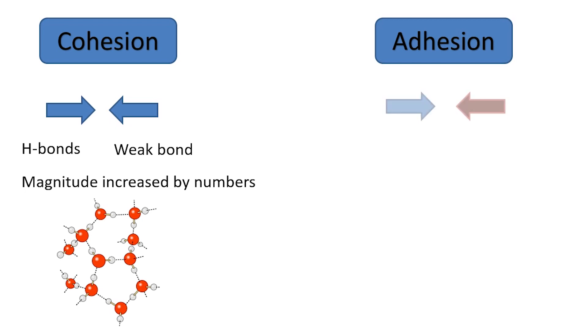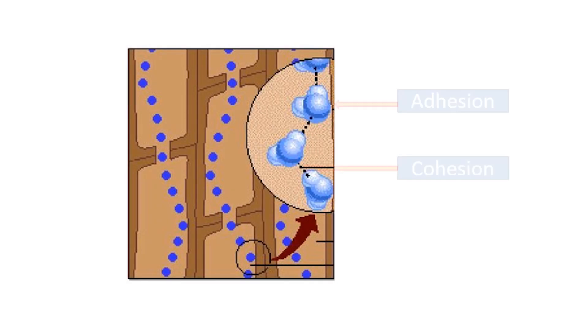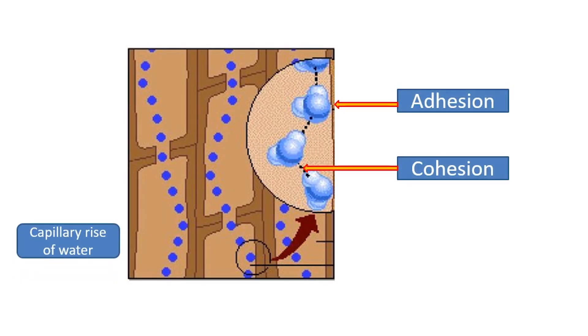Adhesion is attraction between dissimilar molecules. Water sticks to organic substances by adhesion and plants make use of the stickiness for capillary rise of water. Both these forces help in the formation of an unbroken continuous water column capable of capillary rise through the capillaries of xylem.